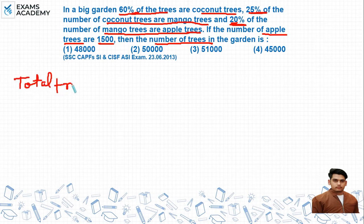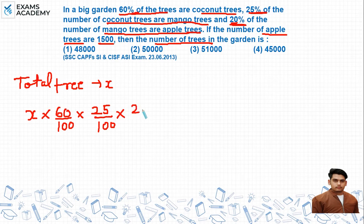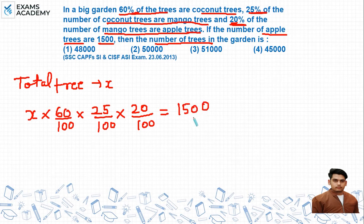Let total trees equal X. 60% of the trees are coconut trees, 25% of those are mango trees, and 20% of the mango trees are apple trees, which equals 1500. Solving: 25/100 simplifies to 1/4, 20/100 simplifies to 1/5, and 60/100 simplifies to 3/5.